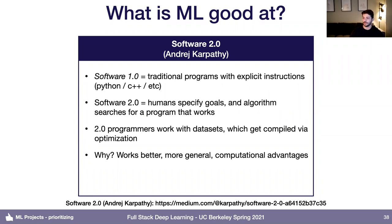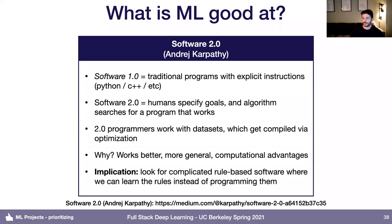The reason to use Software 2.0 is not just that it works better — gradient descent can write better code than you — but also that it's more general, because we can teach computers to do things we can't easily articulate as rules ourselves. There are also computational advantages: instead of complicated control flows, programs become matrix multiplications, and we can design better hardware to suit those computations. For project selection, the implication is to look for places in your product where there's complicated rule-based software, and instead of having people design those complicated rules, you can learn them via data.